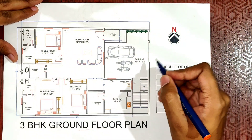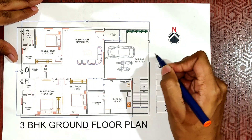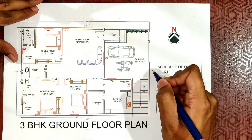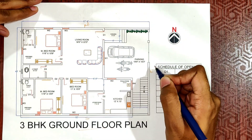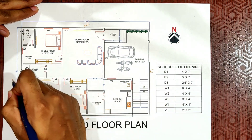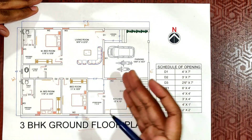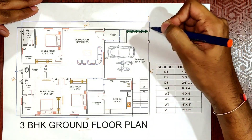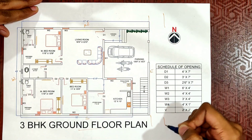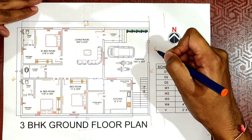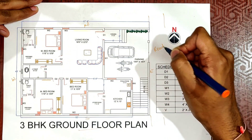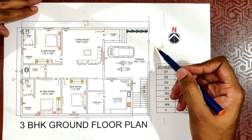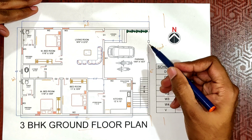This is an east-facing house. This is north, south, east, west. There is a road from north to south, and this is the main gate.